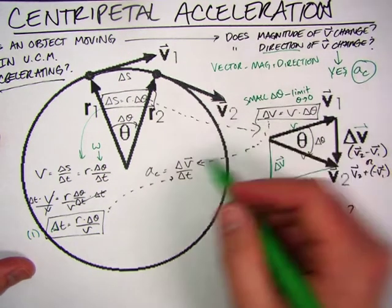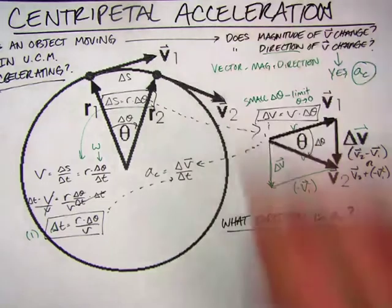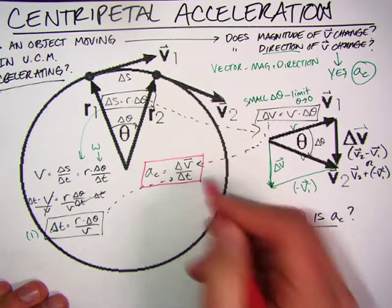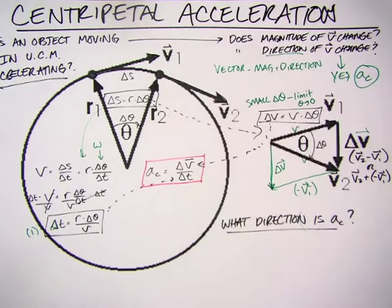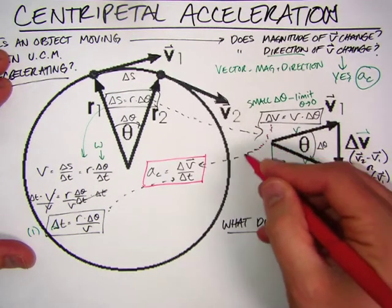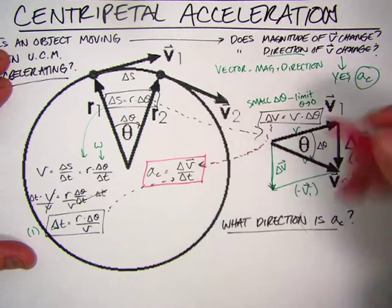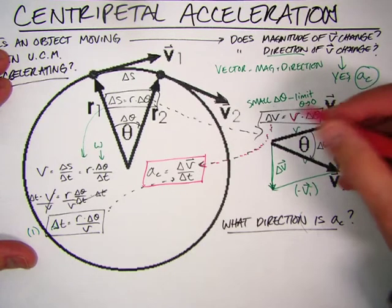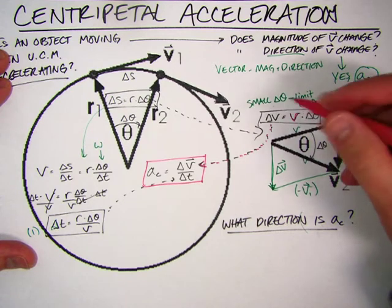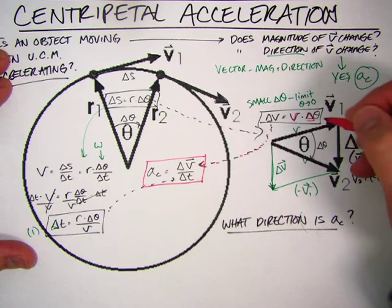And then we go to our basic standard relationship for what is acceleration. Acceleration in general is the change in velocity over a certain amount of time. Well, what I'm going to do is some substitution tricks. I'm going to substitute in for change in velocity, the magnitude V of the linear speed of the motion in an object times the change in angle delta theta.